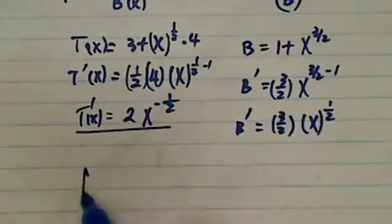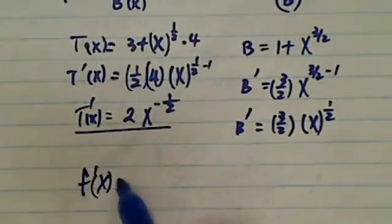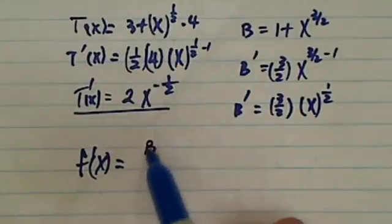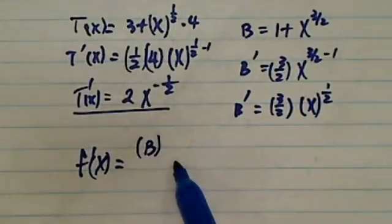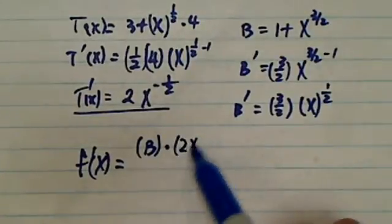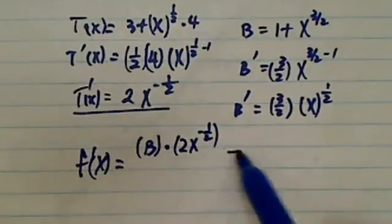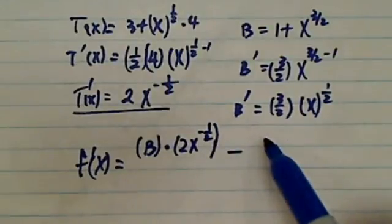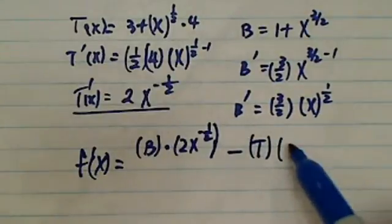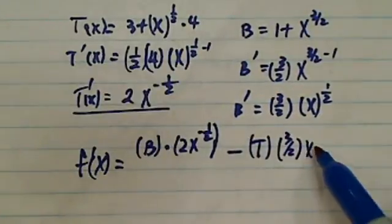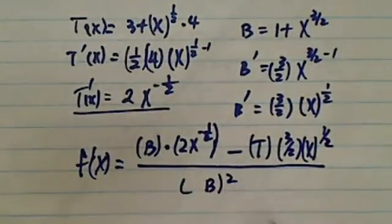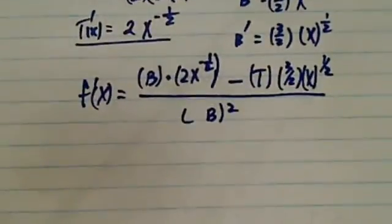Now putting all those together, then you would have f function prime is equal to—now remember what we said earlier—the bottom function doesn't change. B is the bottom function times T primed, which is 2x to the minus half, minus the top doesn't change, I'll just put top here, and the bottom primed is three halves x to the half. The whole thing is divided by the bottom squared.